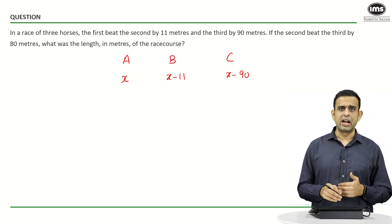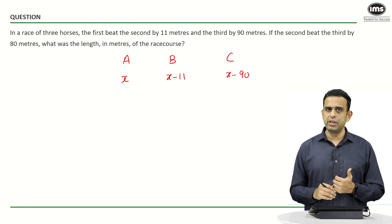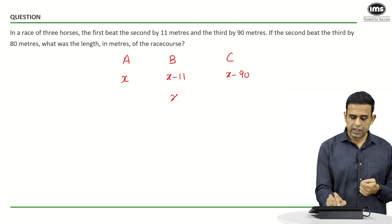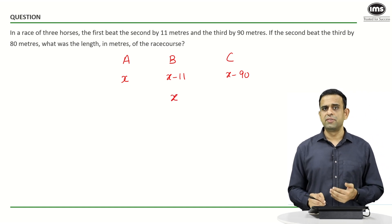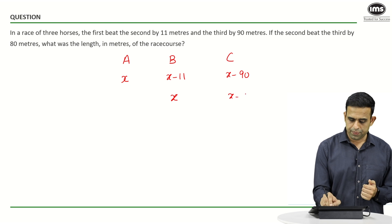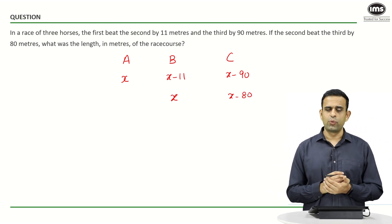In the second scenario, it is given that the second horse beat the third one by a distance of 80 meters. This simply means that when the second horse has covered a distance of X, in the same time C has covered a distance of X minus 80.